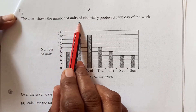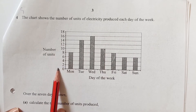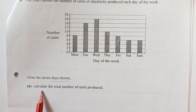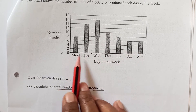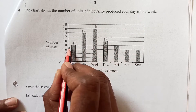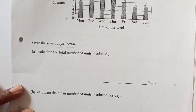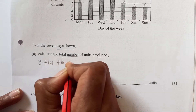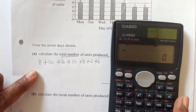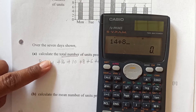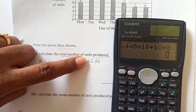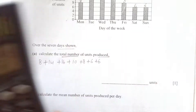The chart shows the number of units of electricity produced each day of the week — Monday to Sunday. Calculate the total number of units produced over seven days. The values are 8, 14, 16, 10, 8, 6, and 6. Adding all of them: 8 + 14 + 16 + 10 + 8 + 6 + 6 = 68 units.